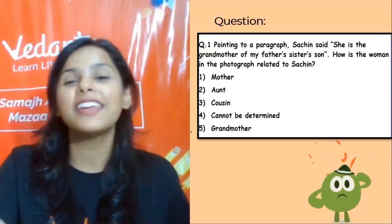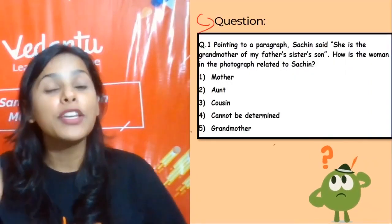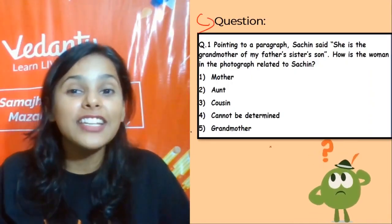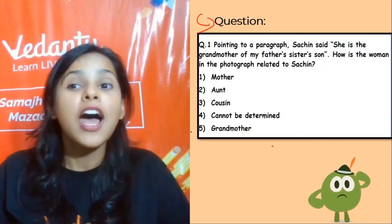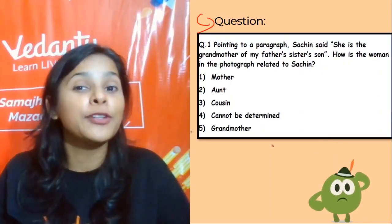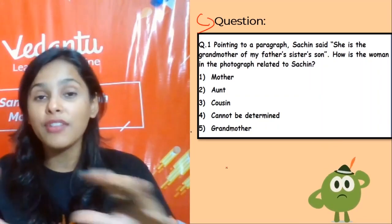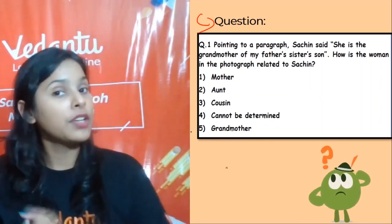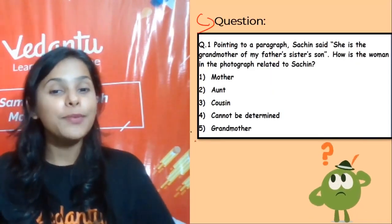Next question: pointing to a photograph, Sachin said, 'She is the grandmother of my father's sister's son.' How is the woman in the photograph related to Sachin? Pause the video and try this question using the tips I have given you.